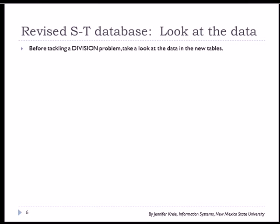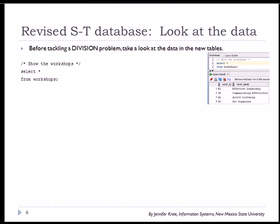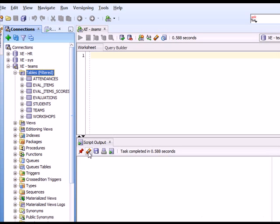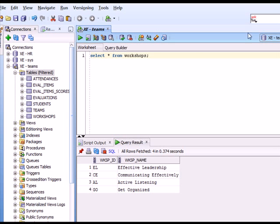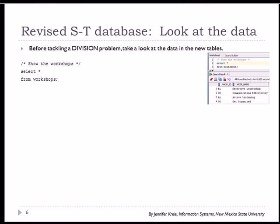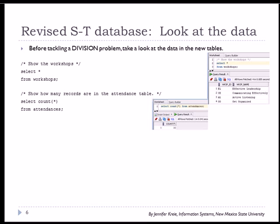So what we will do is look at how many workshops that we have, and we'll see that there are four. If I run this, switching back over, just do a select asterisk from workshops and you'll see that I have those four. So we could also see what data or how much data we have in attendances. I do a select count on attendances and I see that we have 30 records. I'm just trying to get an overview of the data that we have in these tables so I can judge whether the output seems reasonable.